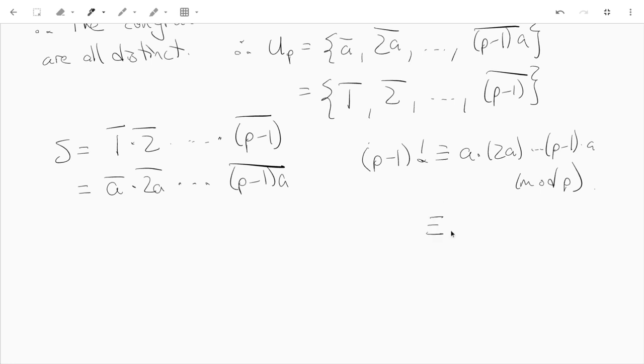So on the right-hand side, it's really Aᵖ⁻¹ times (p-1)!. And (p-1)! has gcd with p equal to 1. And that tells us that by cancellation, we get Aᵖ⁻¹ ≡ 1 mod p. Multiply both sides by A, you get Aᵖ ≡ A mod p.